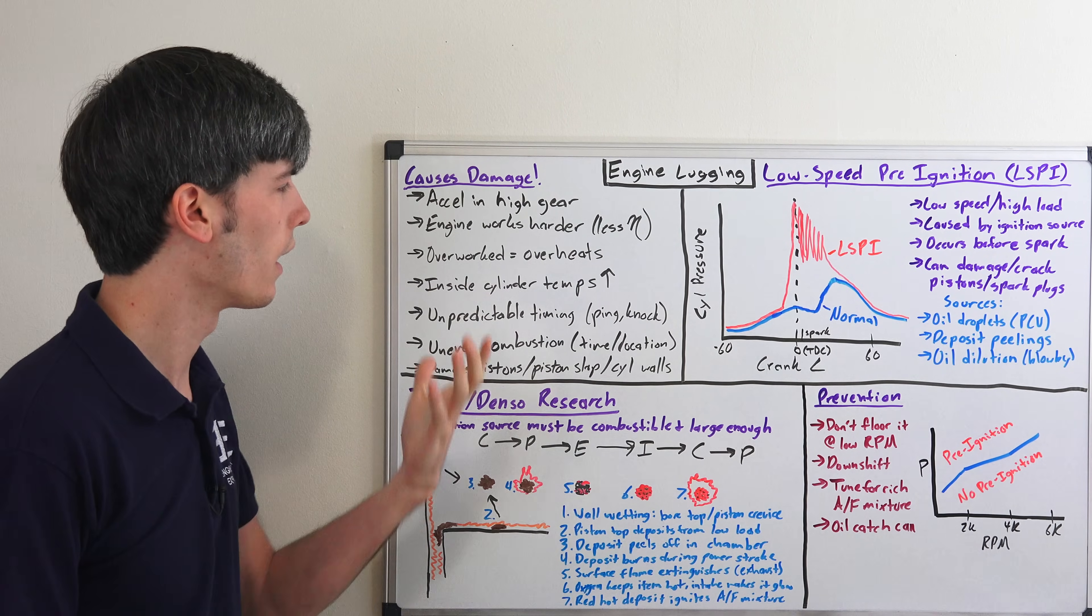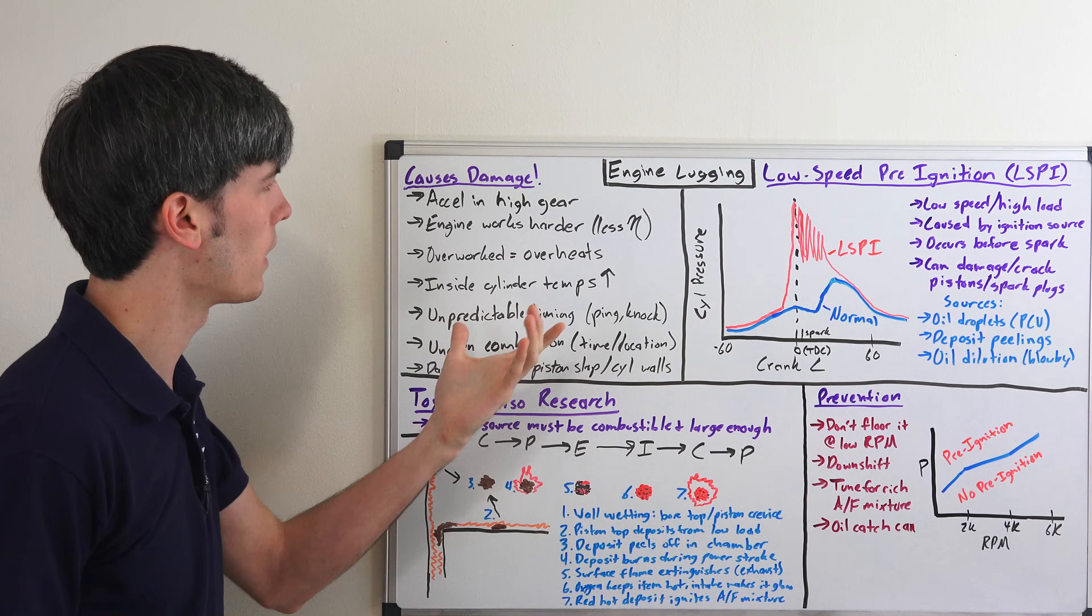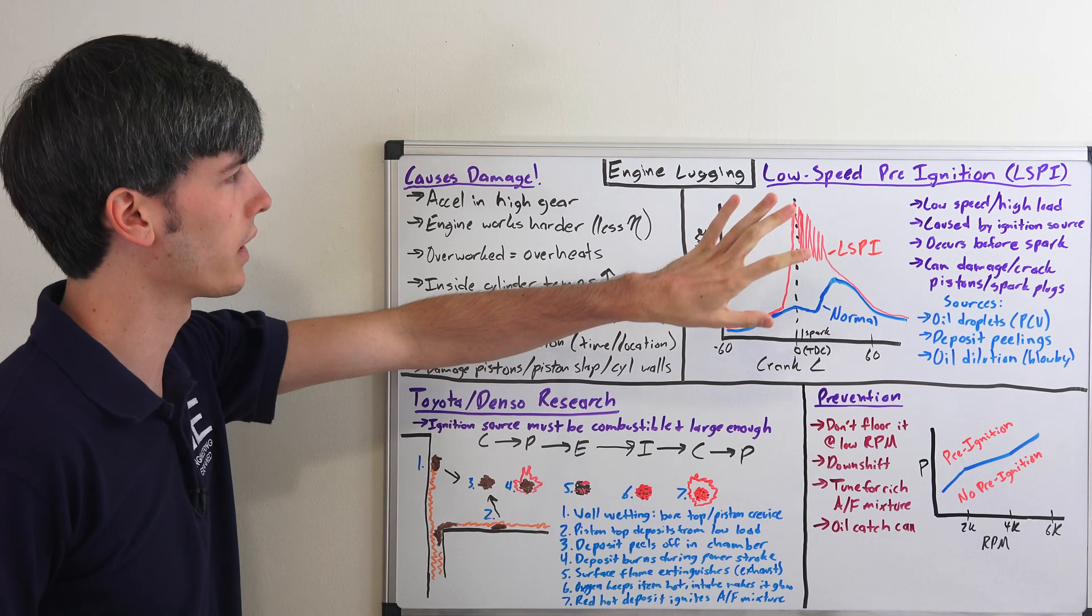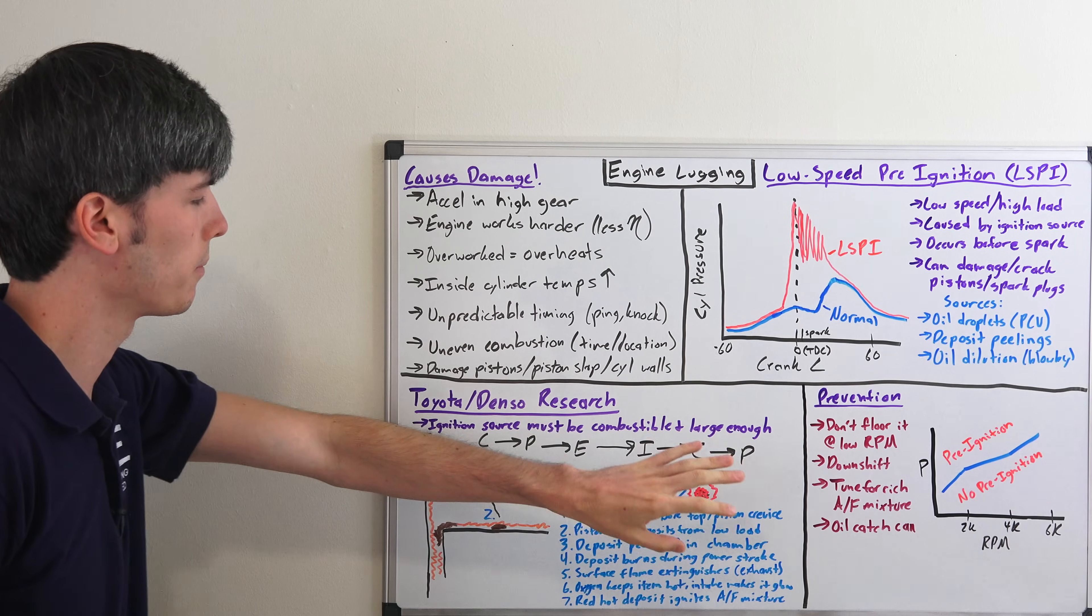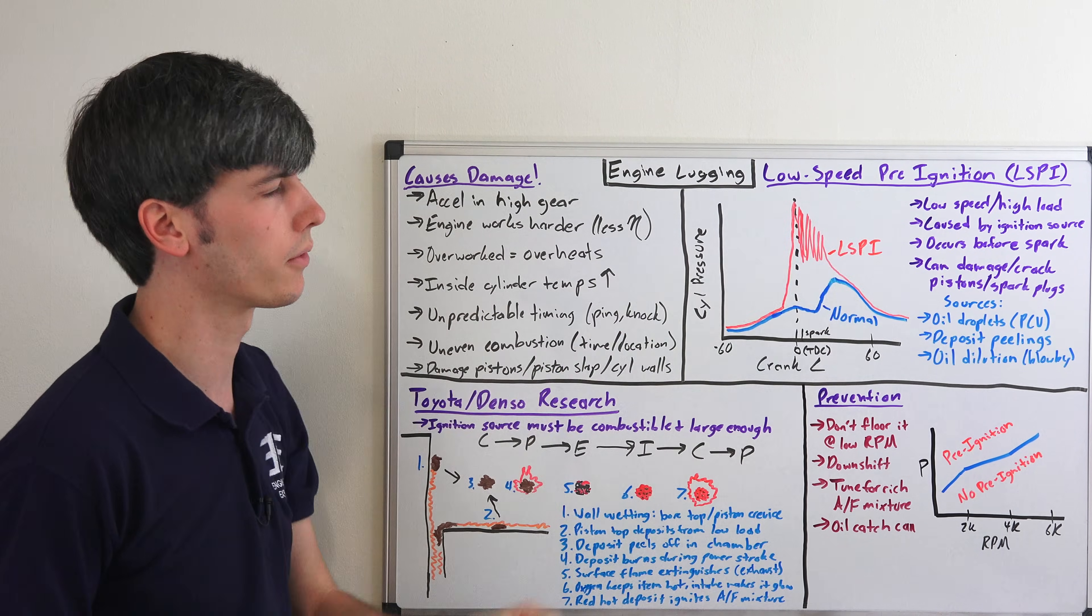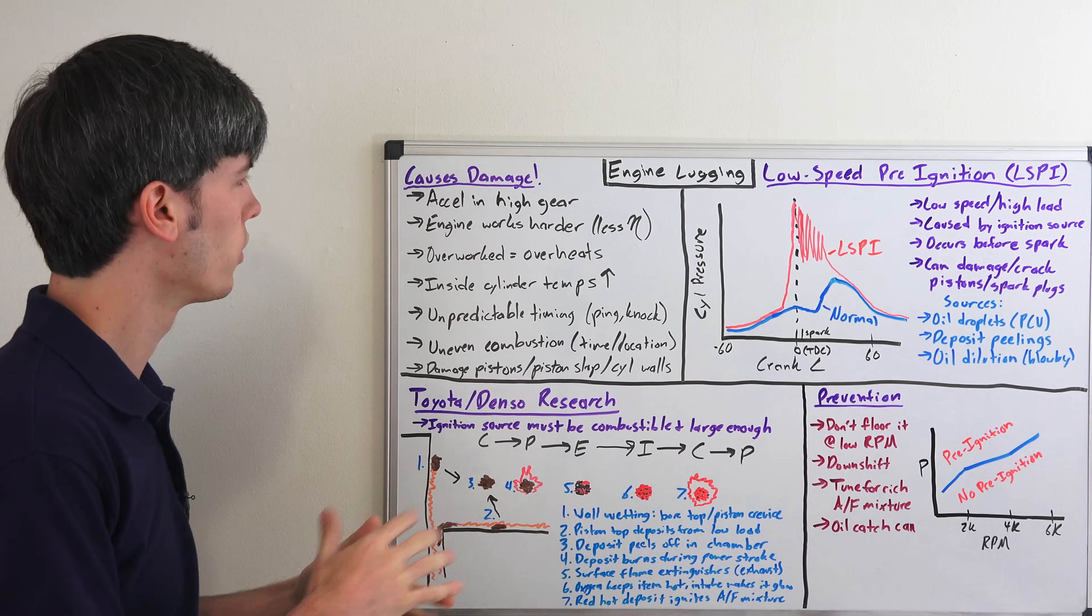First of all I want to get into some logic that I actually heard from Car Talk and I thought it made quite a bit of sense, and then I'm going to get into a study done by Toyota and Denso talking about low speed pre-ignition, which is more prevalent for small turbocharged engines using higher boost.